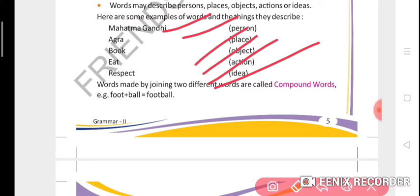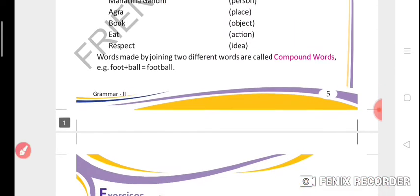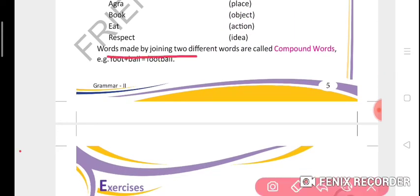Words made by joining two different words are called compound words. When we join two different words to form one word, it is known as a compound word. For example, foot plus ball - what will come by joining these two words? Football.